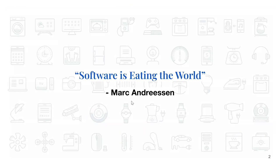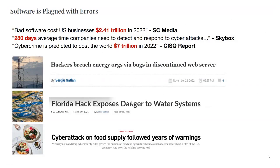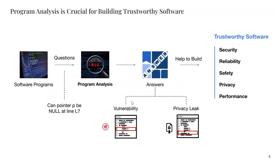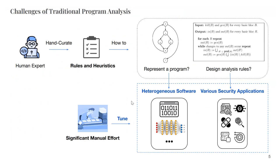Software is taking over every aspect of our daily lives, and in the meantime it is becoming easier to attack due to increased attack surfaces. It has been reported that even critical infrastructure we depend on is being attacked and is vulnerable. Program analysis is a key technique towards building trustworthy software, but it requires human experts to spend a lot of effort tuning correct program representations and analysis rules for various program artifacts.